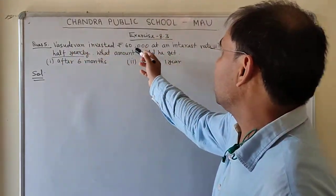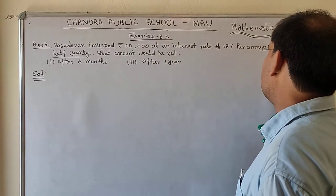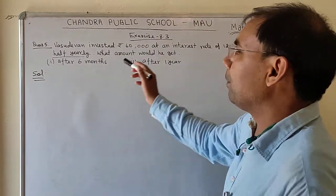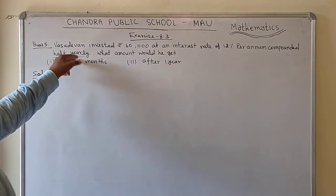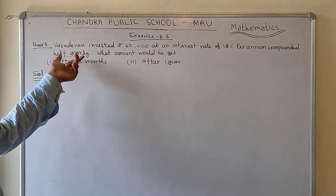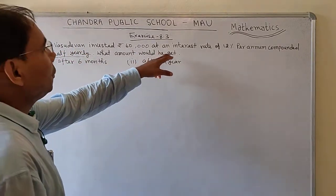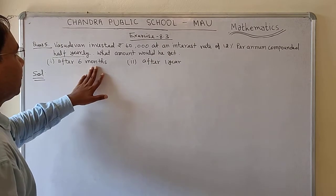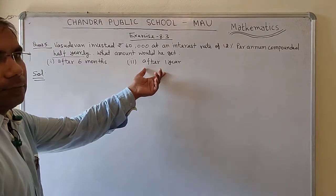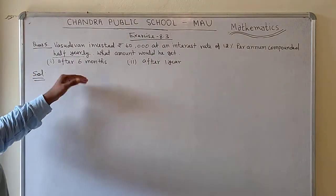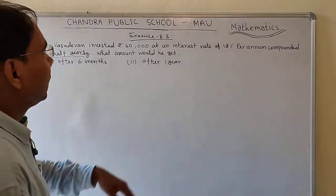Ravan invested ₹60,000 at an interest rate of 12% per annum, compounded half-yearly. What amount would he get after 6 months in the first condition, and after 1 year in the second condition?